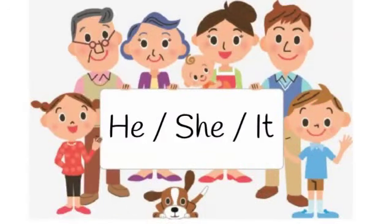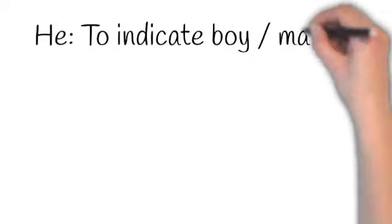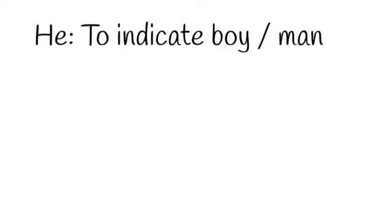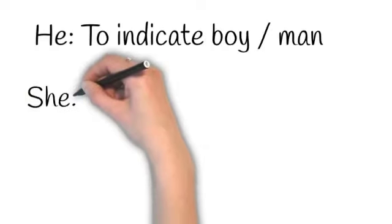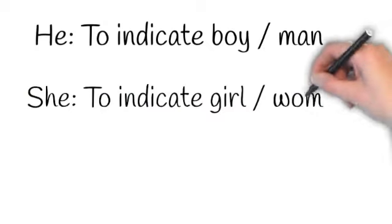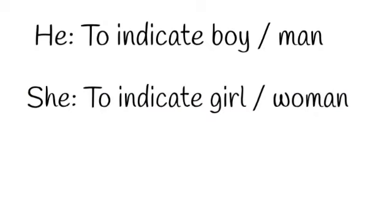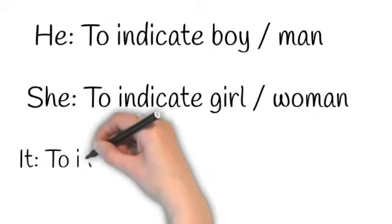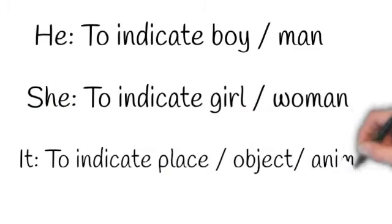Hello children, today we are going to learn about how to use he, she, and it — where to use and how to use them. We use he to indicate a boy or a man, we use she to indicate a girl or a woman, and we use it to indicate a place, an object, or an animal.